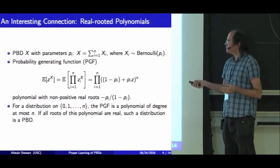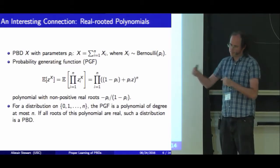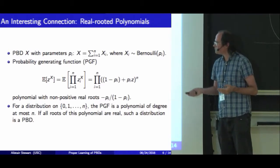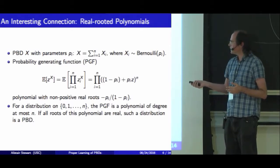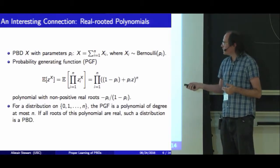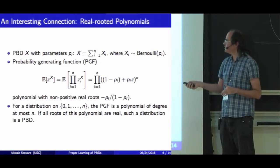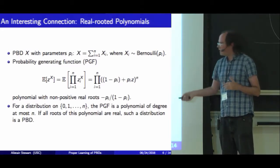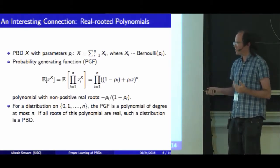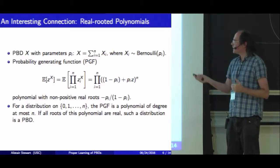We consider the probability generating function given by this expectation. When we add independent random variables we take convolutions of the distribution, and we also get convolutions by multiplying polynomials. So this is a product of the probability generating functions of each of the Bernoullis, which is particularly simple. This is a polynomial, and this factorization tells you exactly what the roots are in terms of the probabilities of each Bernoulli — and they're all real and negative. In general, if you have a distribution supported on integers from 0 to n, the probability generating function will be a degree-n polynomial, and if all roots are real, we can factorize it to recover parameters for a Poisson binomial distribution.